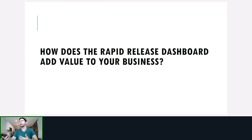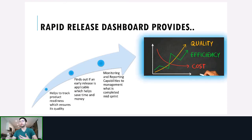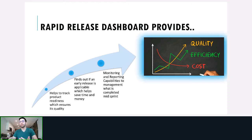How does this Rapid Release Dashboard add value to your business? There are three main reasons. First, it helps track product readiness, which ensures quality — you're always able to make an informed decision and know where you are at a given time during the project release. Second, it lets you determine whether an early release is applicable, so maybe you're ahead of schedule and can push that release sooner to production, saving time and money. Third, it enables monitoring and reporting capabilities for management — you can see what's being completed mid-sprint, with no more having to ask your delivery team. You have a single source of truth that clearly displays visual updates.